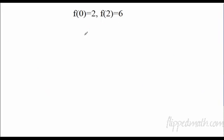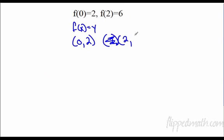But this is read f of x equals y. So x here would be 0, y would be 2. x here would be 2, and then y would be 6. So now, we have two points. We need an m and a b. How do we find m?